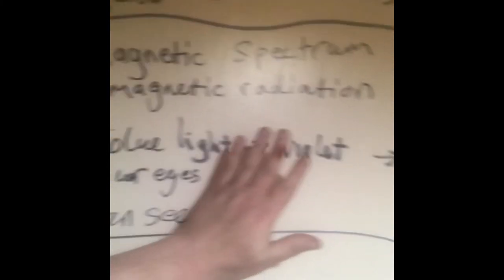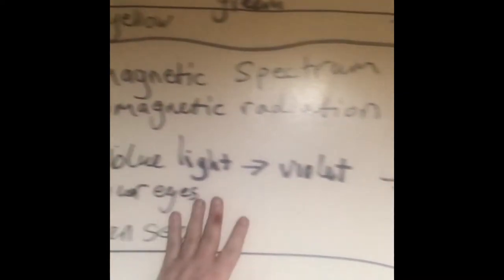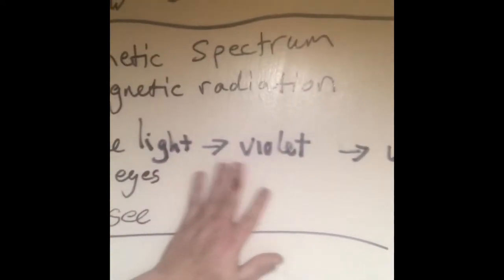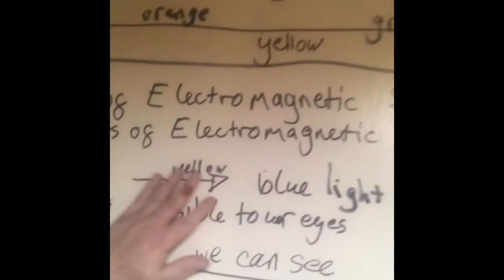Then, we move to visible light again. We have the red light, yellow light, blue light, violet. That's part of the visible electromagnetic spectrum, visible light. But we see it all combined normally as white light.